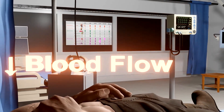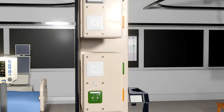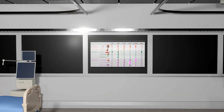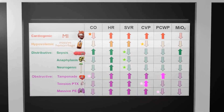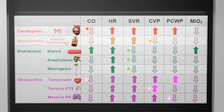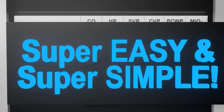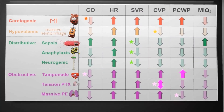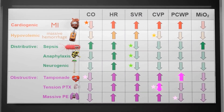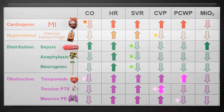There are various causes of shock and each of these causes have their own parameters. In this video, we're going to talk about those parameters and make it super easy and simple. We're going to be talking about cardiogenic shock, hypovolemic shock, distributive shock, and obstructive shock.